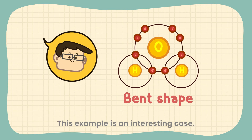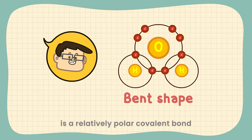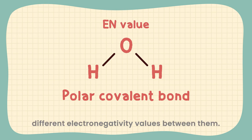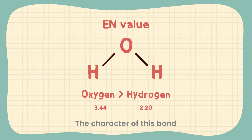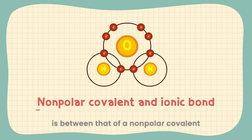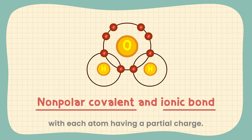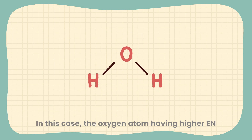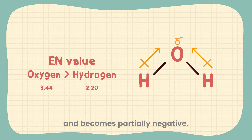This is an interesting case. The bond between oxygen and hydrogen is a relatively polar covalent bond, caused by different electronegativity values between them. The character of this bond is between that of a non-polar covalent and an ionic bond, with each atom having a partial charge. The oxygen atom, having higher EN, is able to attract the shared bonding electrons more and becomes partially negative.